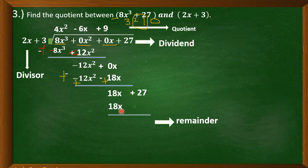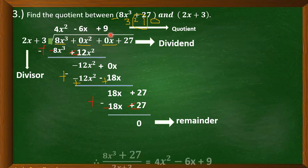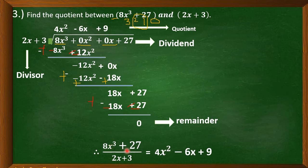Multiply: 9 times 2x is 18x, and 9 times 3 equals 27. Subtract — change the sign: 18x becomes negative 18x and 27 becomes negative 27. Add: 18x plus negative 18x equals 0, and 27 plus negative 27 equals 0. Our remainder is 0 and our quotient is 4x squared minus 6x plus 9. Therefore, 8x cubed plus 27 divided by 2x plus 3 is equal to 4x squared minus 6x plus 9.